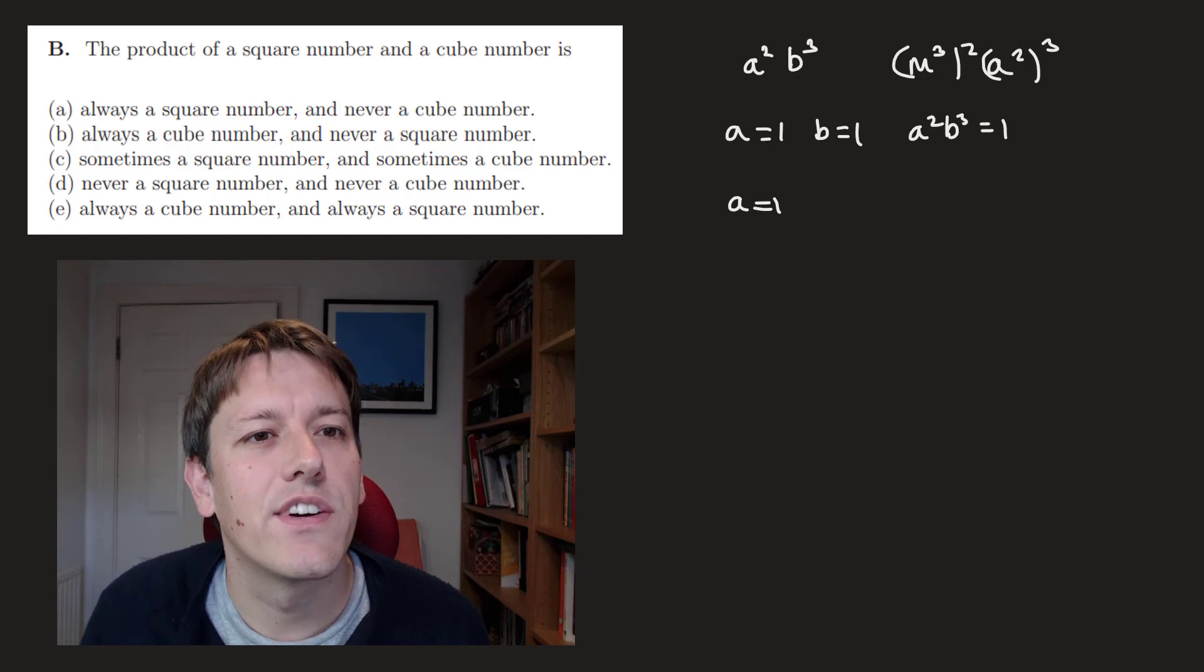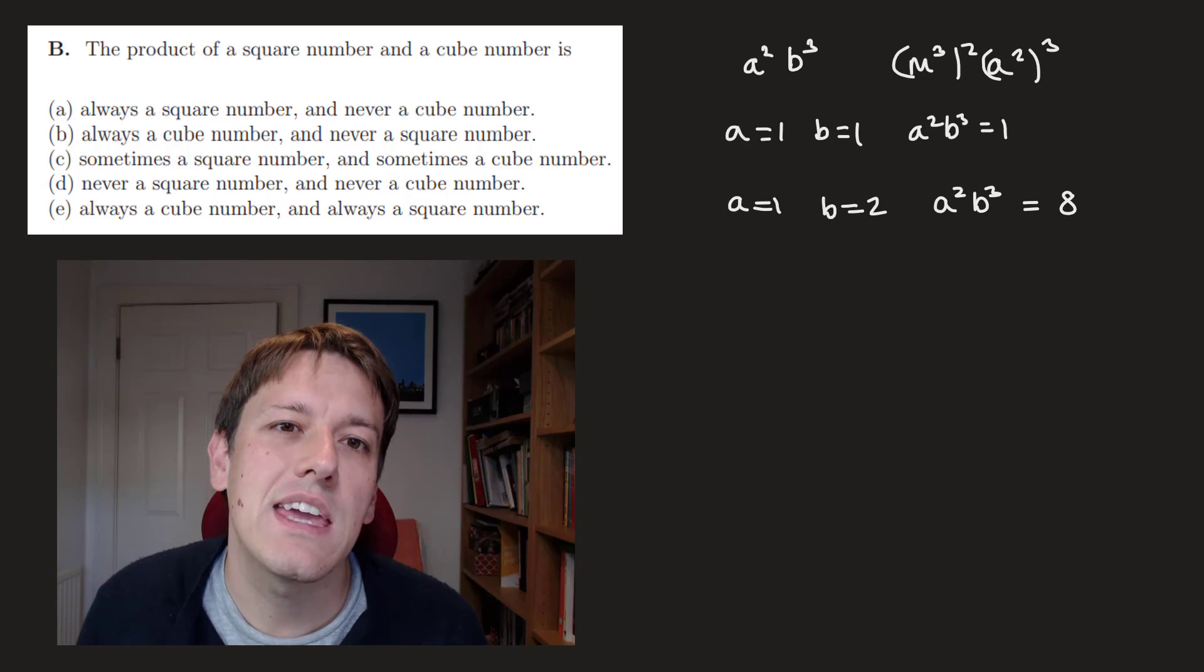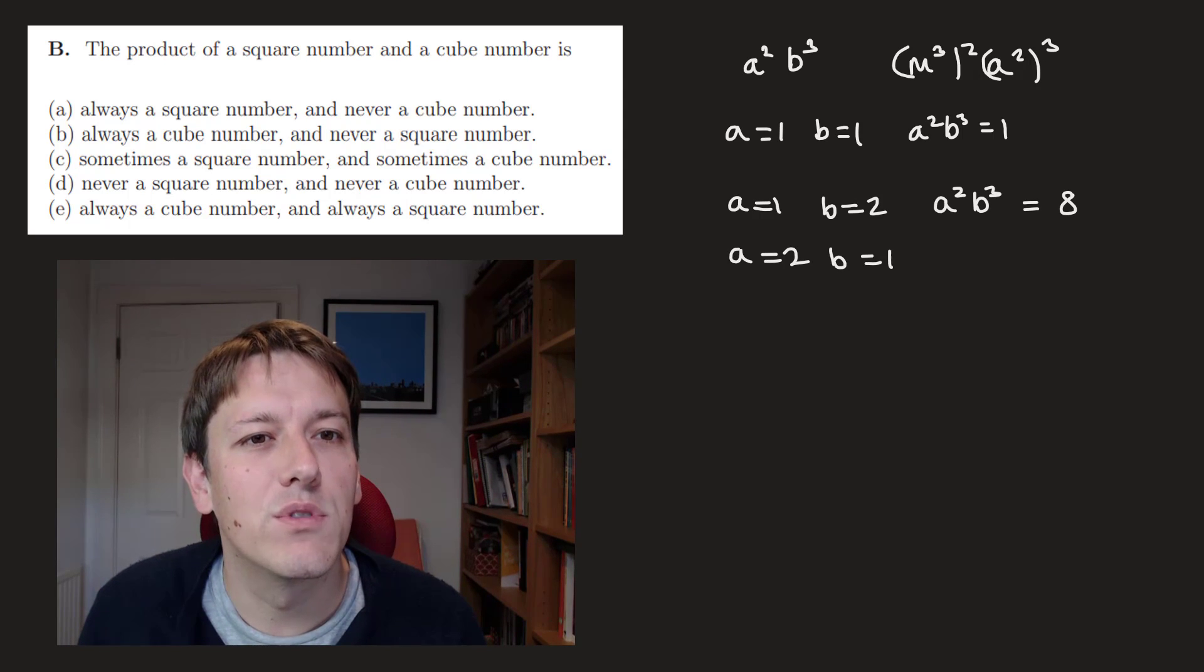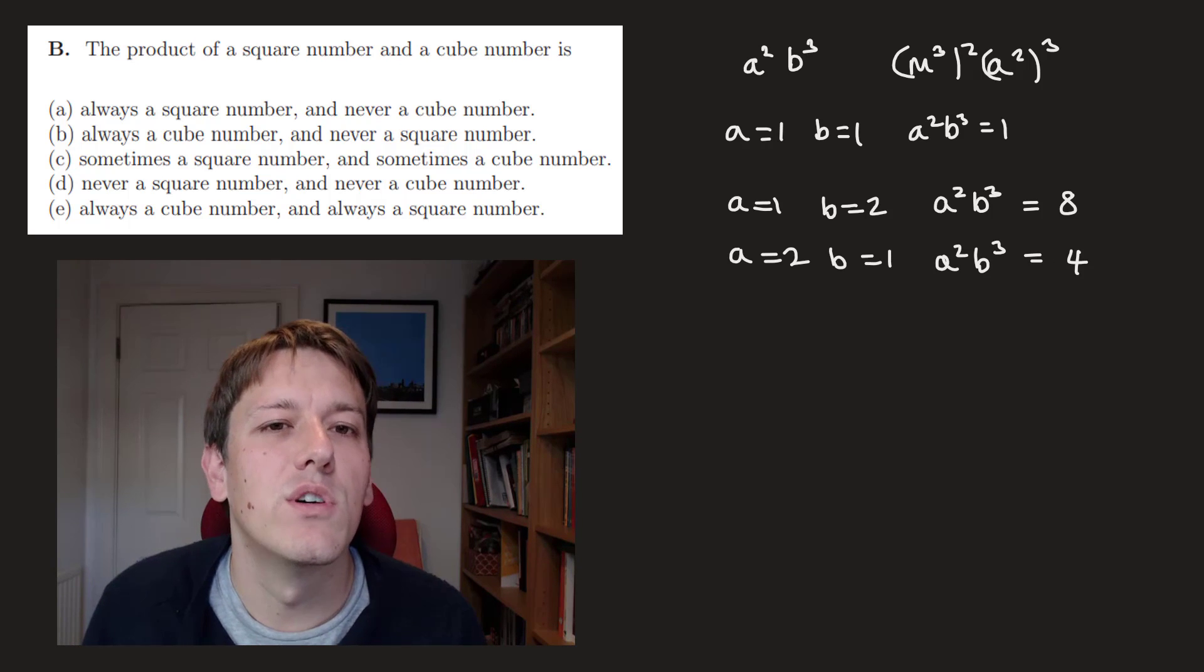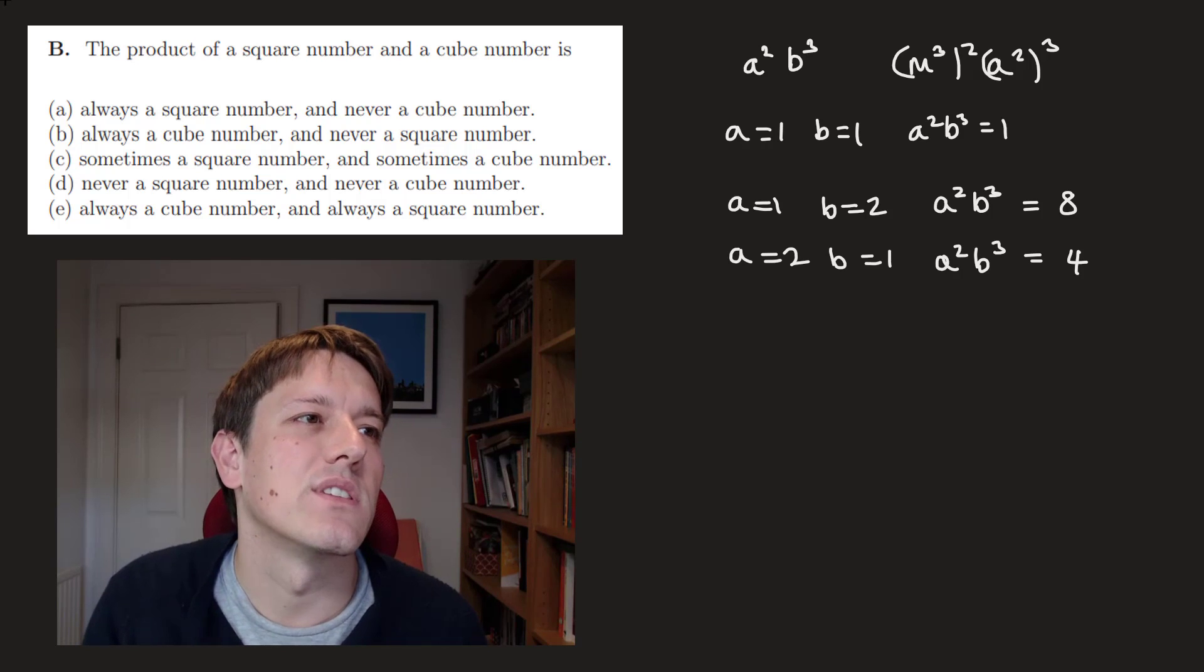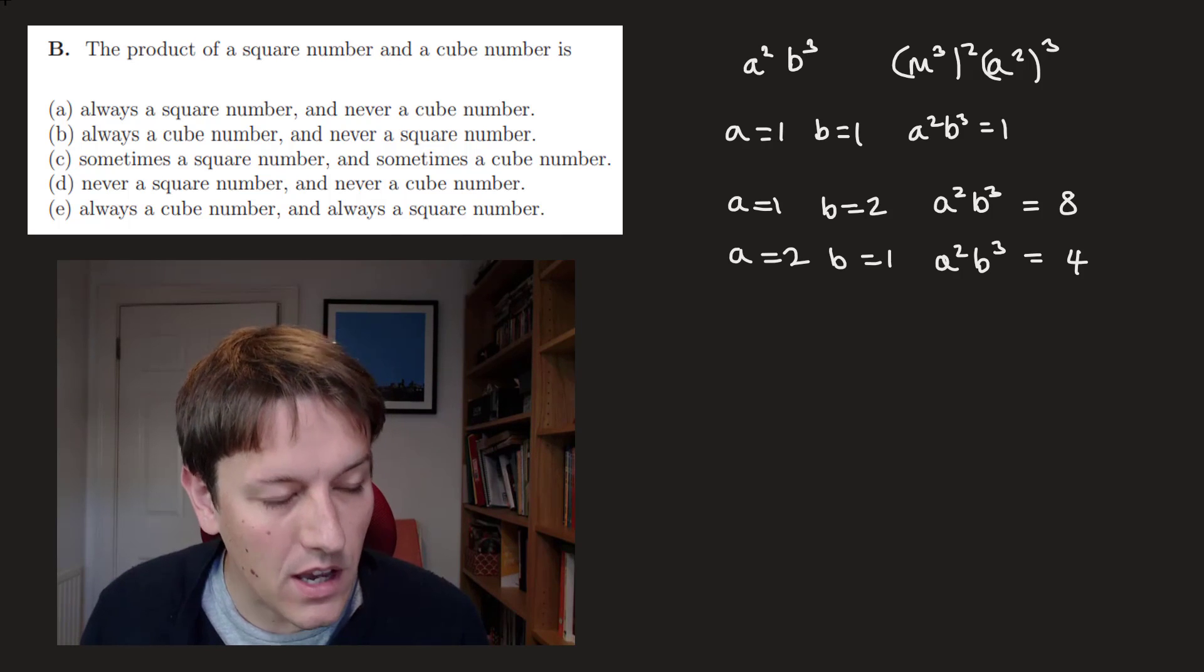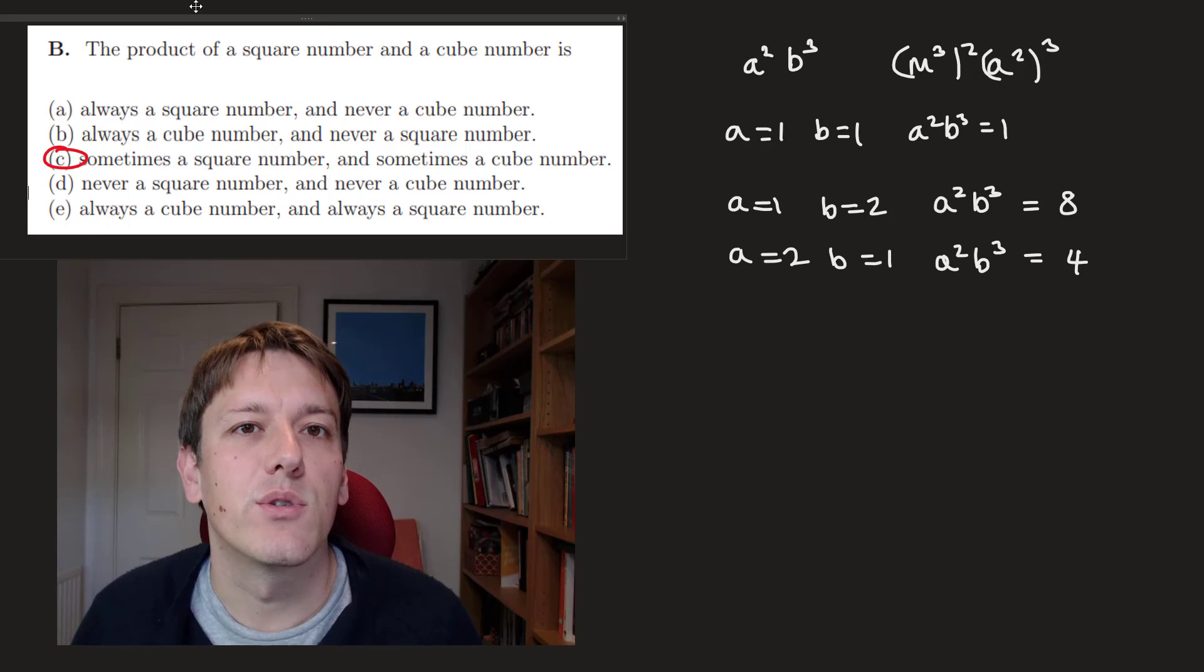Well, again, some simple cases, like if I just do a equals 1 and b equals 2, then a squared b cubed here is going to be 8. So I'm saying my square number is 1 and my cube number is 8 and the product is cube but not square. Whereas if I took a equals 2 and b equals 1, so my square number times my cube number is now 4 times 1, which is 4. I get a square number but not a cube number. And of course, there's tons of different examples you could take here with slightly larger numbers if you prefer. But this means the answer is that it's sometimes a square number and sometimes a cube number, but not always.